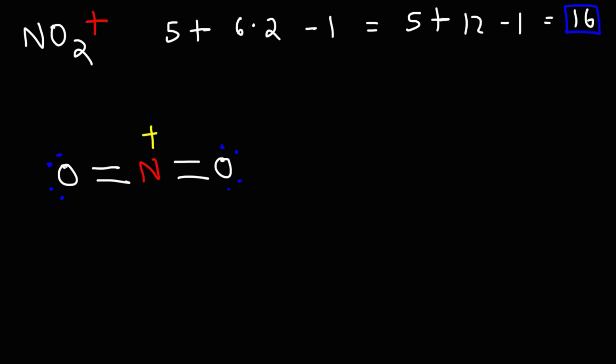Now we talked about the molecular geometry of this particular ion. We said that it has a linear shape. It looks very similar to carbon dioxide. The only difference is this ion has a charge. Carbon dioxide is neutral.